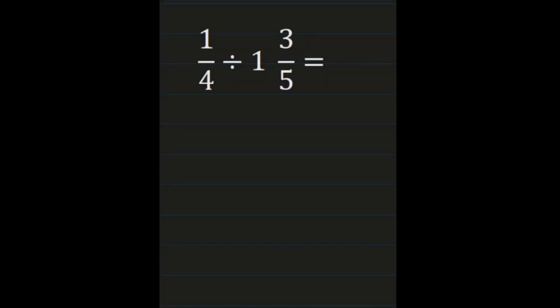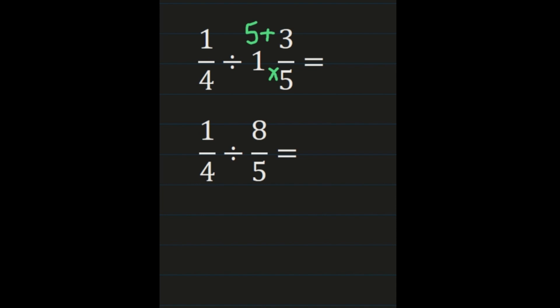For our third example, we have 1 fourth divided by 1 and 3 fifths. We have a fraction divided by a mixed number and we need both numbers in fractional form. 1 fourth is already a fraction, so we leave it. For 1 and 3 fifths, we turn it into an improper fraction by multiplying our denominator times our whole number: 5 times 1 is 5, then adding the numerator: 5 plus 3 is 8. Our denominator of 5 remains the same.